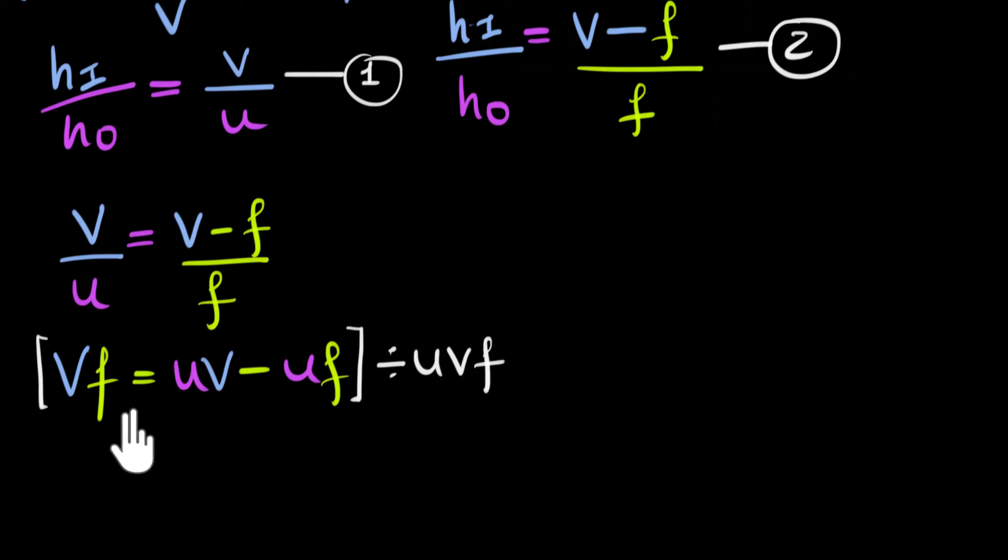And we'll see that we end up with a very simple equation now. At least, at least simple looking equation. All right, so if we divide the whole equation by U, V, F, notice V and F cancel over here. And so you end up on the left-hand side with one over U.